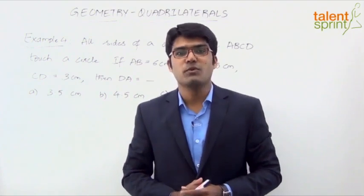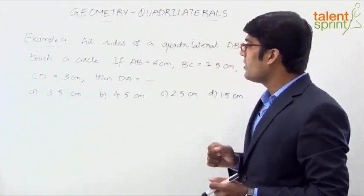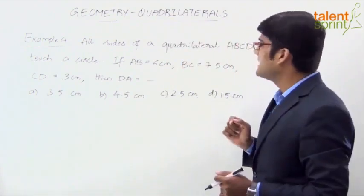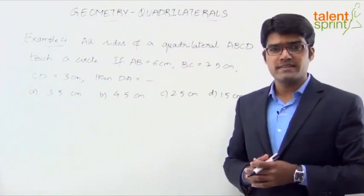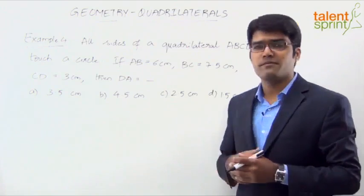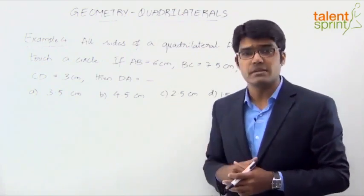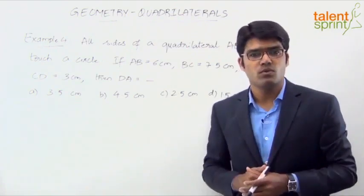Let us now look at example 4. The question here is, all sides of a quadrilateral ABCD touch a circle. If AB is equal to 6 centimeters, BC is 7.5 centimeters, CD is 3 centimeters, then DA is equal to what?